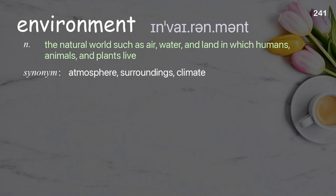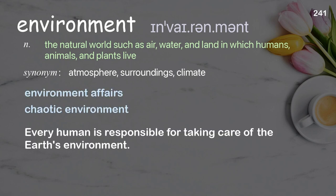Environment: the natural world such as air, water, and land in which humans, animals, and plants live. Examples: chaotic environment. Every human is responsible for taking care of the Earth's environment.